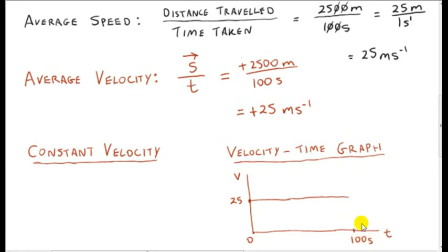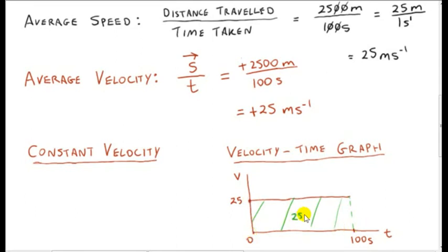You might notice that the distance traveled by the car is the area of this rectangle — it's the area under the velocity-time graph. We just multiply 25 by 100 to get 2500 meters for the distance traveled. We'll cover this in a later video. For now, we are just interested in considering the different types of velocity that the car has.